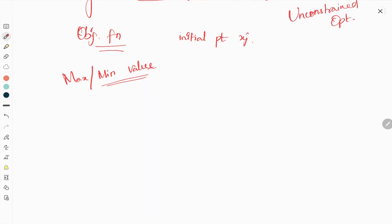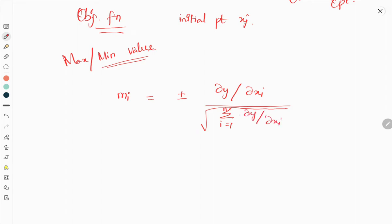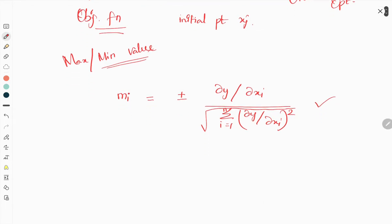After some derivation, we have in hand the value of mi, which is plus or minus (∂y/∂xi) divided by the square root of the sum from i=1 to n of (∂y/∂xi)². The positive sign gives the move in which y increases, and the negative sign gives the move in which y decreases.